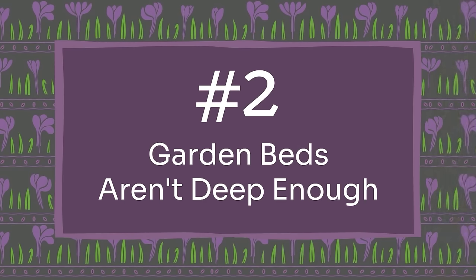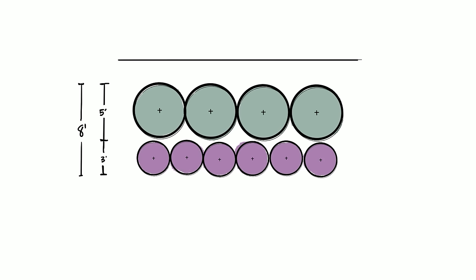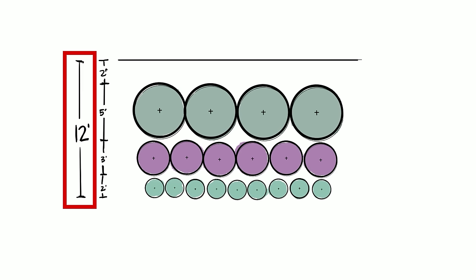Mistake number two when designing a garden bed is making your garden beds too small. I always recommend making your garden beds deep enough to accommodate several rows of plants. Think about designing with three rows of plants in mind — you're going to need at least six to eight feet of depth, and sometimes more. For example, if your back row has shrubs five feet wide, your middle row has plants three feet wide, and the front row is two feet wide, that's already ten feet of depth — and that doesn't even count spacing from your house foundation.